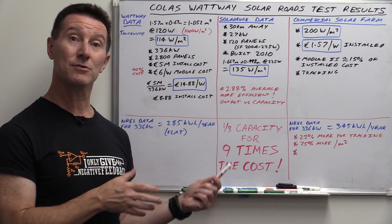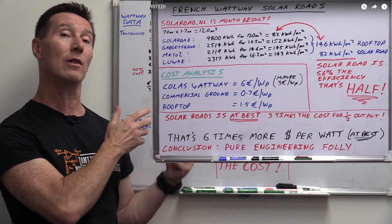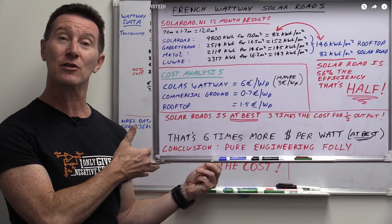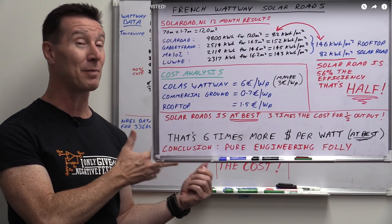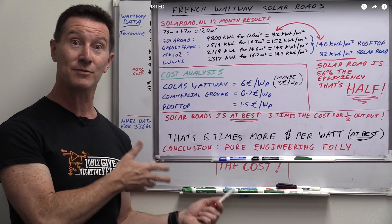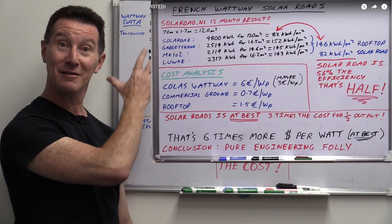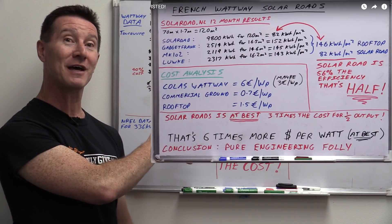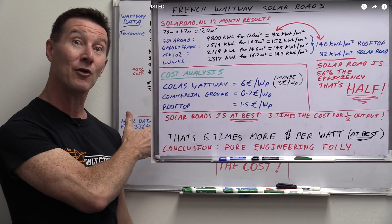Now, in my previous whiteboard analysis of the Colas Wattway project, I came to the conclusion effectively at absolute best, and I was being very generous, half the output for three times the cost. And we'll get to the conclusion looking at almost a year's worth of data and see if I was on the money or not.